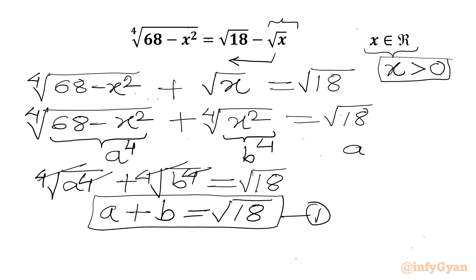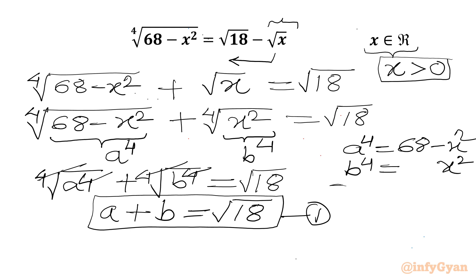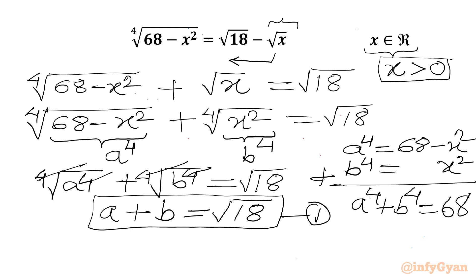Now I will write a⁴ equal to 68 minus x² and b⁴ equal to x². Adding both equations, the x² terms cancel out, giving us a⁴ plus b⁴ equal to 68. This is our equation number 2.